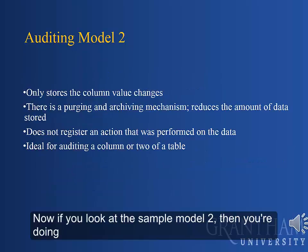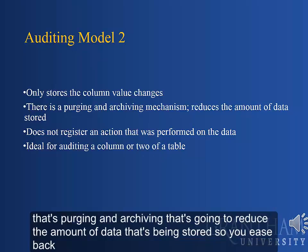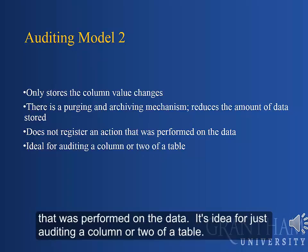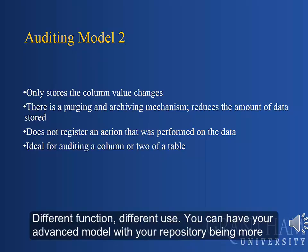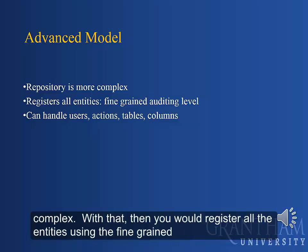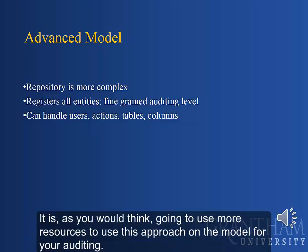With simple audit model 2, you're storing only the column value changes, and there's a mechanism for purging and archiving that reduces the amount of data being stored, easing the resources consumed by the audit. It does not register an action performed on the data and is ideal for auditing just a column or two of a table. The advanced model has a more complex repository — you would register all entities using fine-grained auditing level and can handle different users, actions, tables, and columns. As you'd expect, this approach uses more resources.